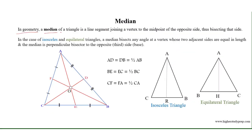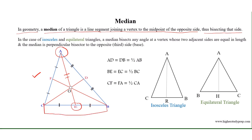Median: in geometry, a median of a triangle is a line segment joining a vertex to the midpoint of the opposite side, thus bisecting that side. For example, in triangle ABC, AE is the line segment joining vertex A to midpoint E, where E is the midpoint of BC such that BE equals EC equals half of BC. Similarly, BF and CD are the other medians with respect to sides AC and AB.